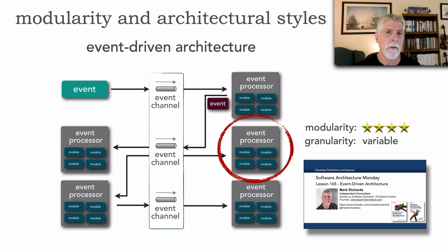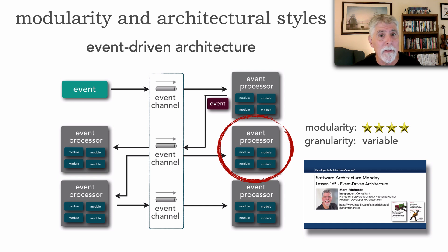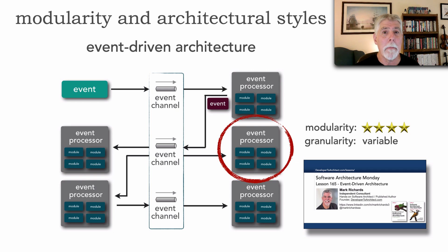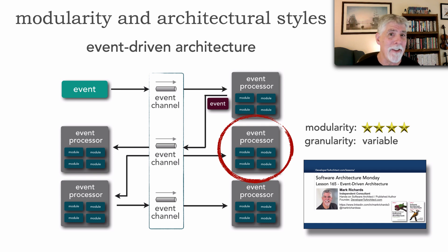I also gave event-driven architecture four stars for one other reason: when we talk about modularity in architecture, we also talk about how coupled things are together — the more coupled the parts, the less modular the system. Event-driven architecture has inherent dynamic decoupling. I say dynamic because we are still coupled by contracts; if I change a contract, I start breaking services unless I version that contract or have other services change. Because of these factors, a rating of four stars is very fair for event-driven architecture.